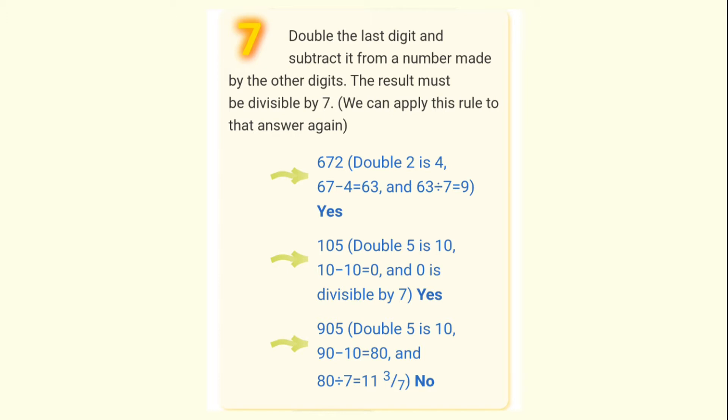Number formed by remaining digit is 67. 67 minus 4, we get 63. Since 63 is divisible by 7, so 672 is also divisible by 7.